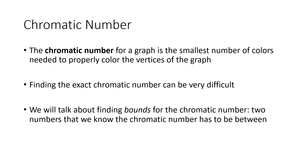Finding the exact chromatic number can be very difficult. We've talked about a greedy coloring algorithm which allows us to find what we think is a pretty good coloring for our graph, but there's no guarantee that that's going to be the best answer. So what we're going to do in this video is talk about finding bounds for the chromatic number — we're going to find two numbers and we're going to know that the chromatic number has to be in between those two numbers.